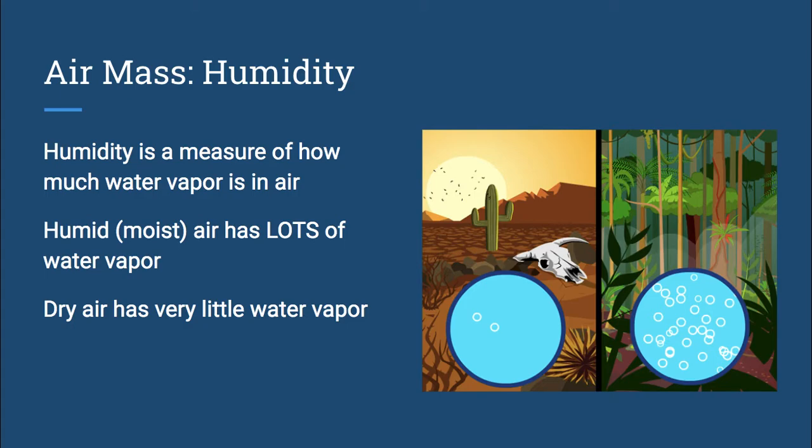Other types of air will be very dry, which means it has very little water vapor. Again, you might want to think about a desert. The air above a desert will have very little water vapor. That air is going to be extremely dry.